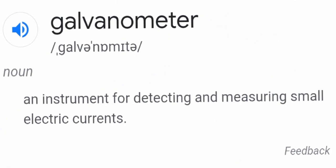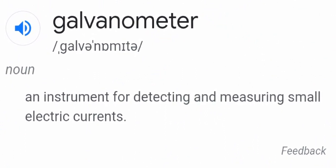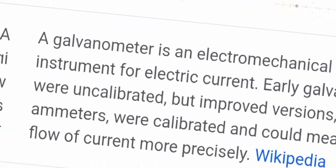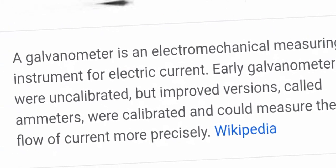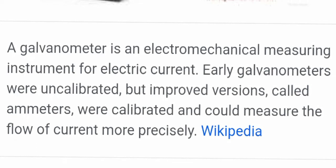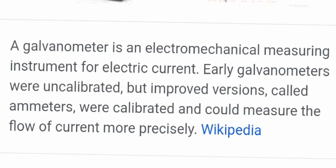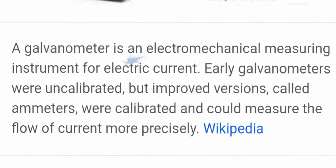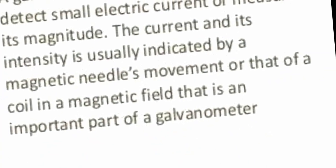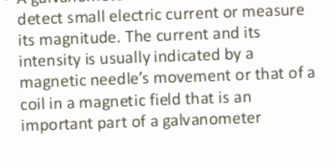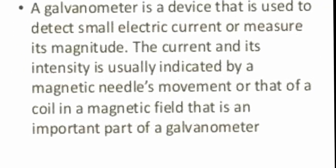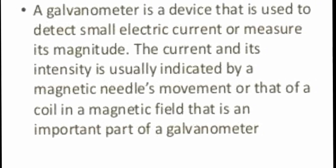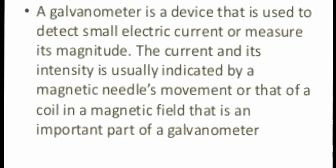The galvanometer is basically a noun and it is an instrument which is used for detecting and measuring small electric current. It is an electromechanical measuring instrument for electric current. Early galvanometers were uncalibrated, but improved versions called ammeters were calibrated and could measure the flow of current more precisely. It is a device used to detect small electric current or measure its magnitude.